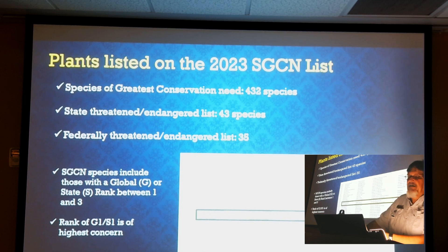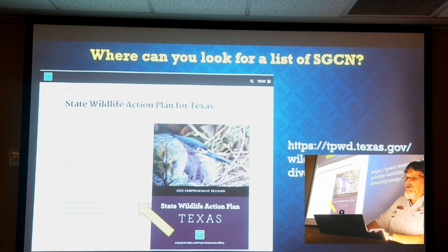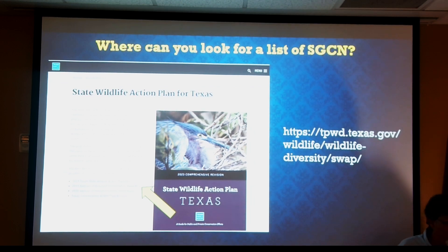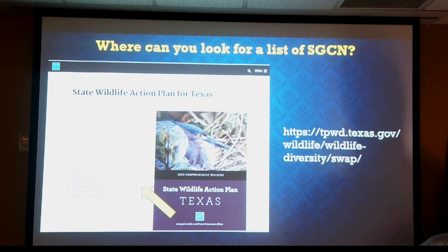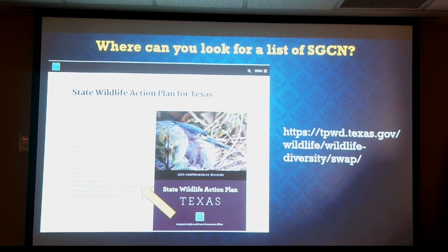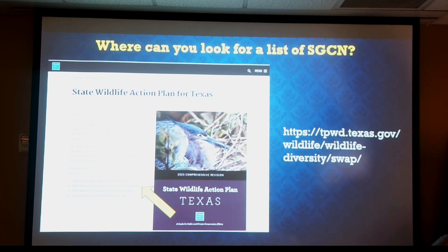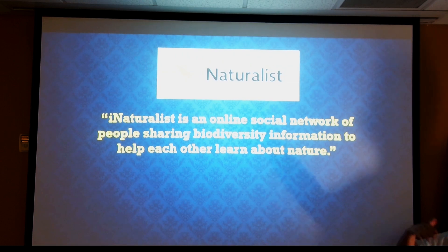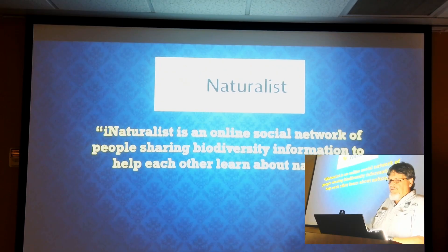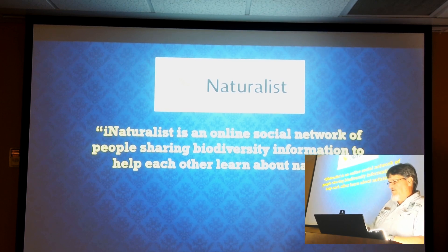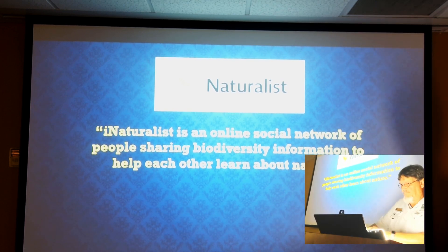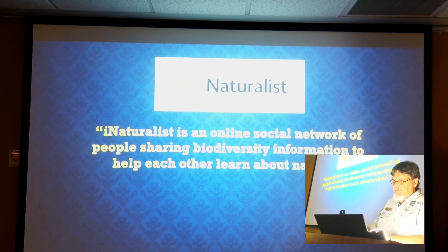You can go to the State Wildlife Action Plan for Texas, which was recently published. There you'll find a link listing all of the SGCNs for all the different plant and animal groups, and learn about what we do to make sure these species don't disappear from the landscape. That document also helps us get our federal funding for wildlife work. For plant research, we have to get state funding because the feds don't have funds for plant work.